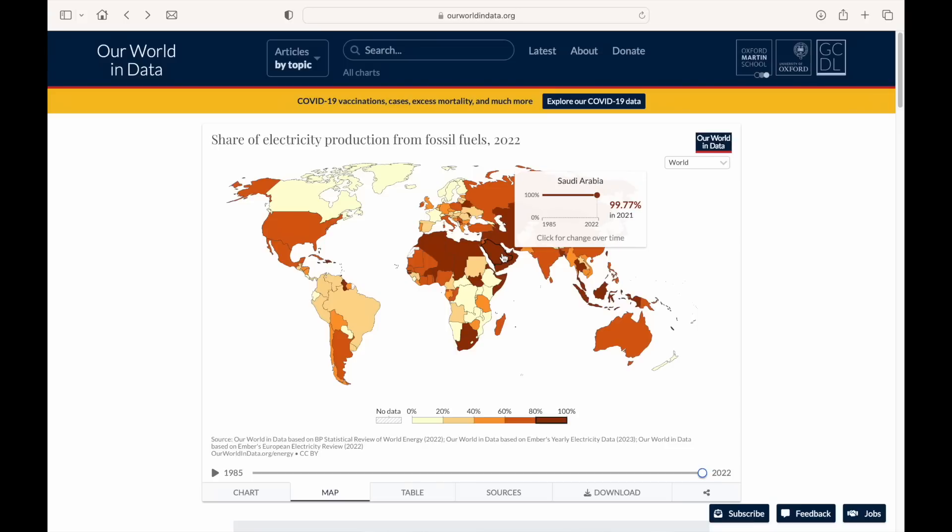Saudi Arabia, perhaps no surprise at nearly 100% with all of their oil. And Australia, 71%, with high coal usage, but slowly coming down. You can also see the changes over the years by adjusting this slider. Feel free to use this website to see what's happening in your own country.